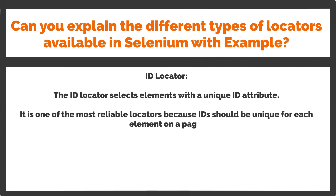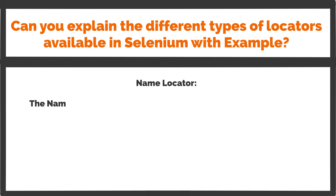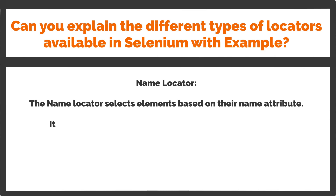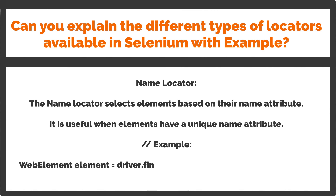// Example: WebElement element = driver.findElement(By.id("element_id")); Name locator: The name locator selects elements based on their name attribute. It is useful when elements have a unique name attribute. // Example: WebElement element = driver.findElement(By.name("element_name"));